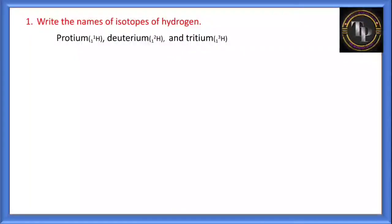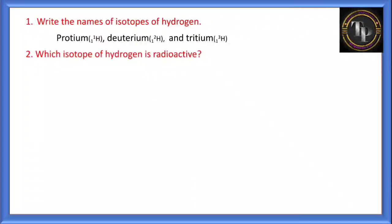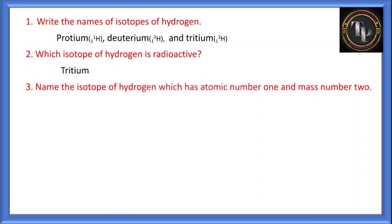What are isotopes? Elements of the same element having the same atomic number but different mass number, or having the same proton number but different neutron number, are called isotopes. Second question: which isotope of hydrogen is radioactive? Tritium is the radioactive isotope of hydrogen.